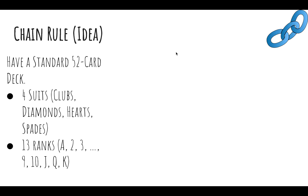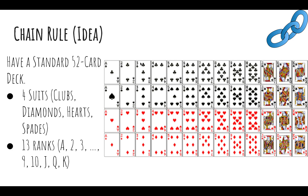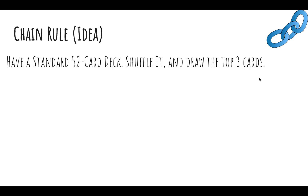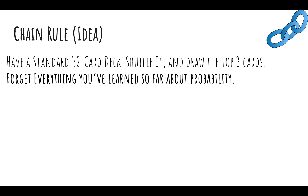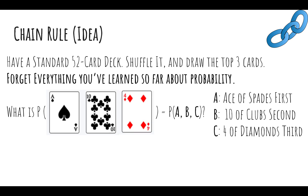So let's say we have a standard 52-card deck. A 52-card deck consists of four suits — clubs, diamonds, hearts, and spades — and 13 ranks, ace through king. A 52-card deck has exactly one of each pair. So let's shuffle the deck and draw the top three cards. What is the probability that we drew the ace of spades first, then the ten of clubs, and the four of diamonds? This is written as the probability of A and B and C. Sometimes we use commas instead of the intersection sign. I would intuitively say 1/52 times 1/51 times 1/50.